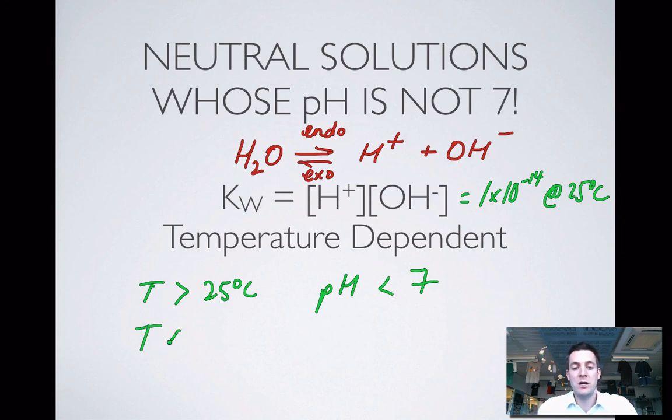If I lower the temperature, Le Chatelier's principle says the system will try to raise it by favoring the exothermic reaction. The concentrations of these ions will fall, KW will also fall. In the process, the concentration of H plus will fall and the pH will be greater than 7. But it won't become a basic solution because both these ions are in equal concentration.